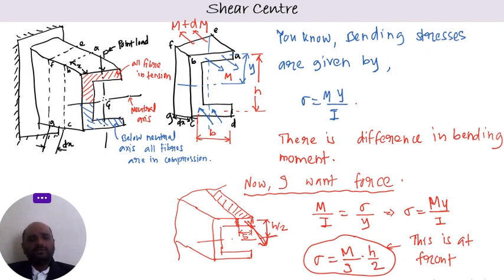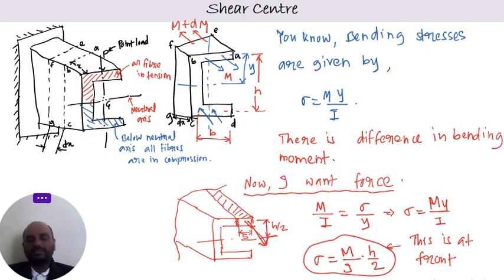Shear stresses exist because of the difference in bending moment. From the basic bending formula: M/I = σ/y, where y is the distance from the neutral axis. Since the section is thin, y can be taken as h/2 from the center. So, σ = M × (h/2) / I for the front face.